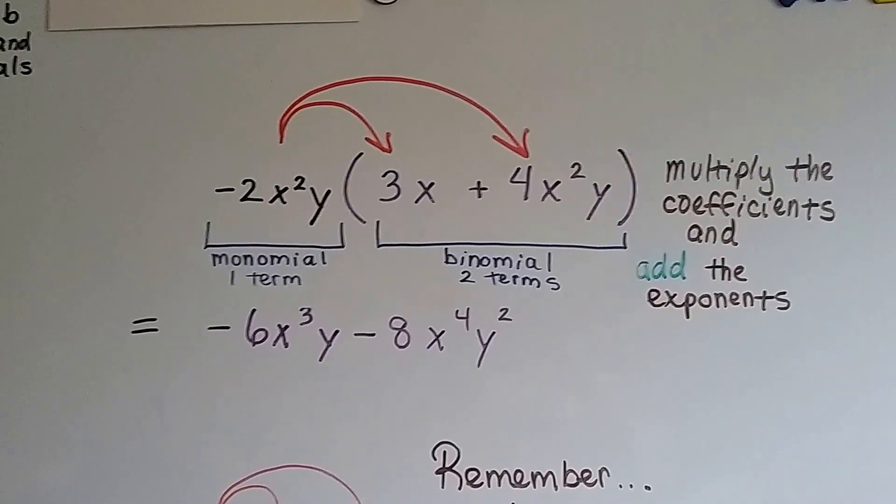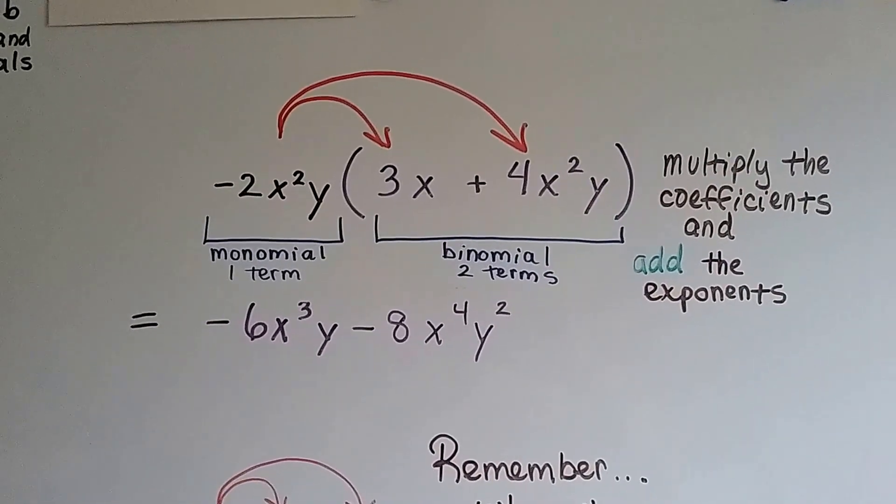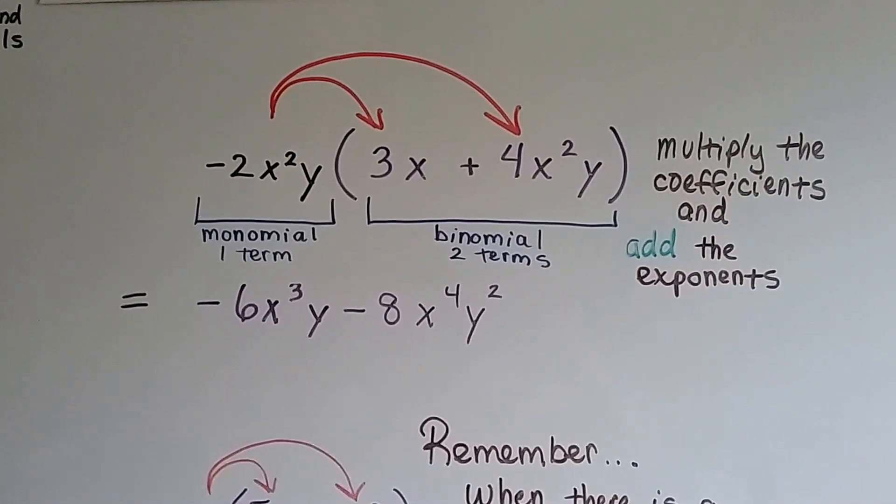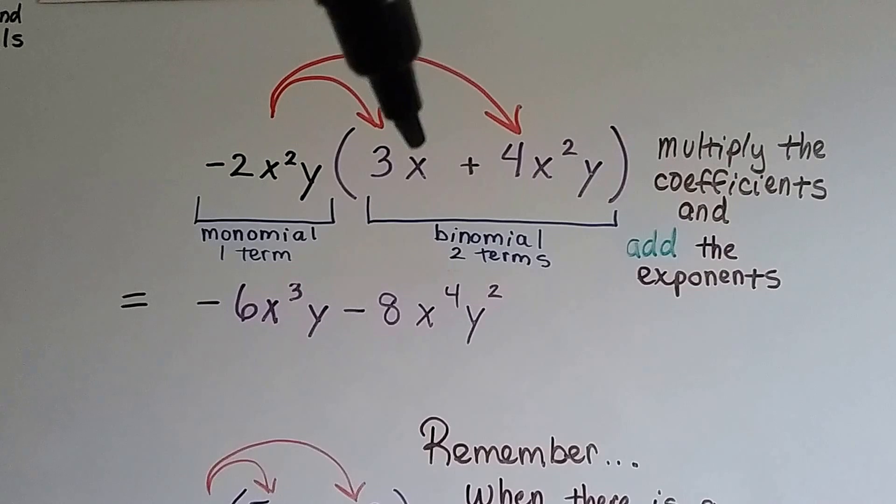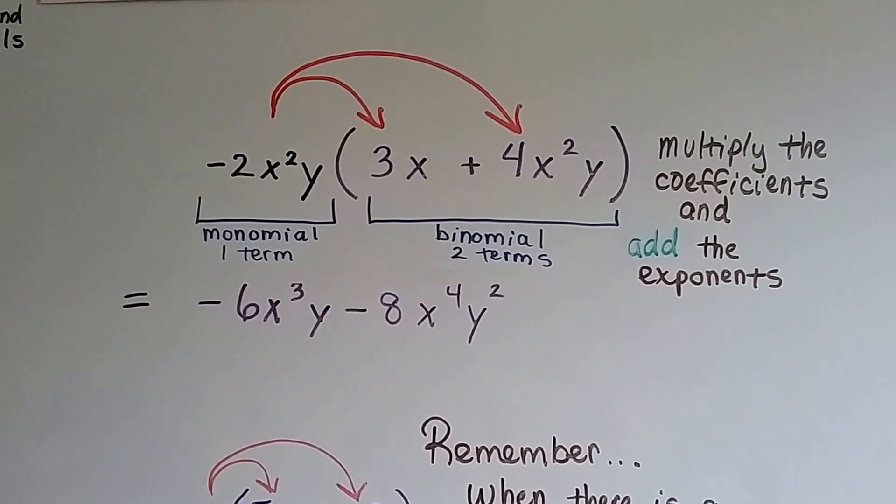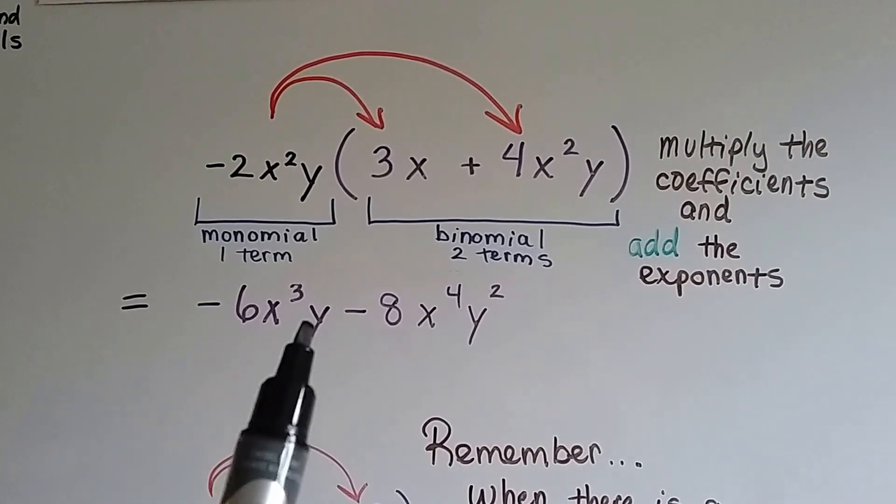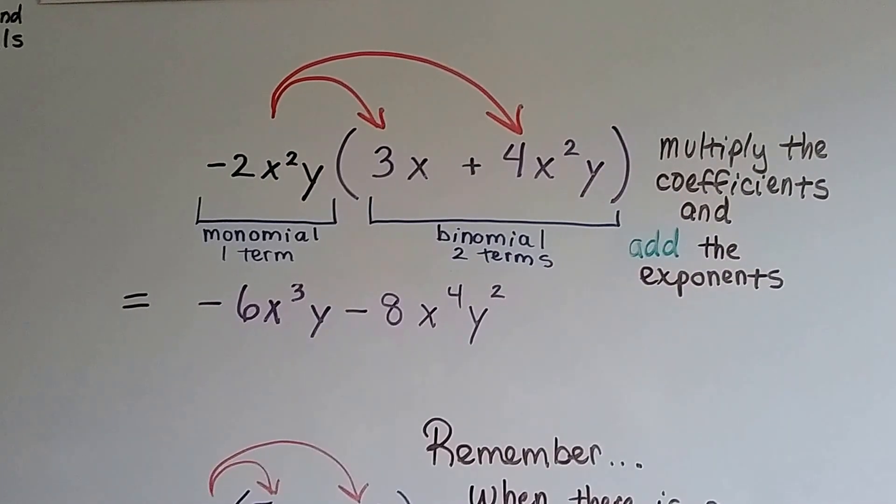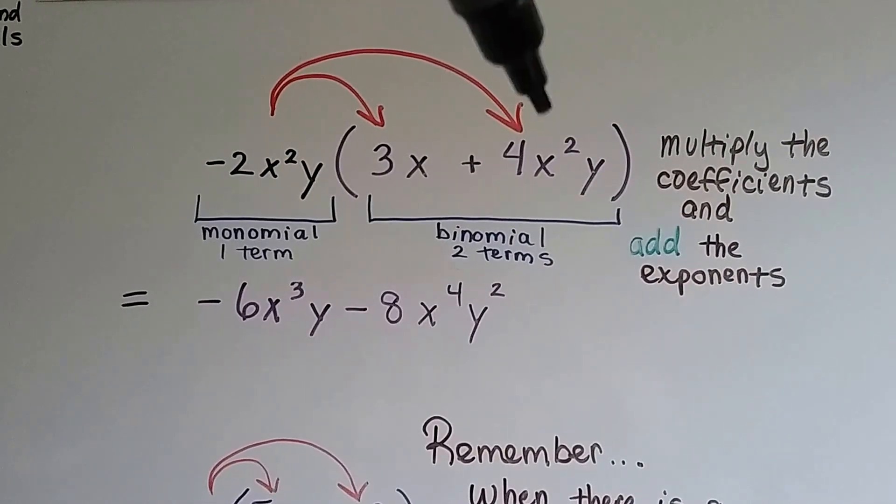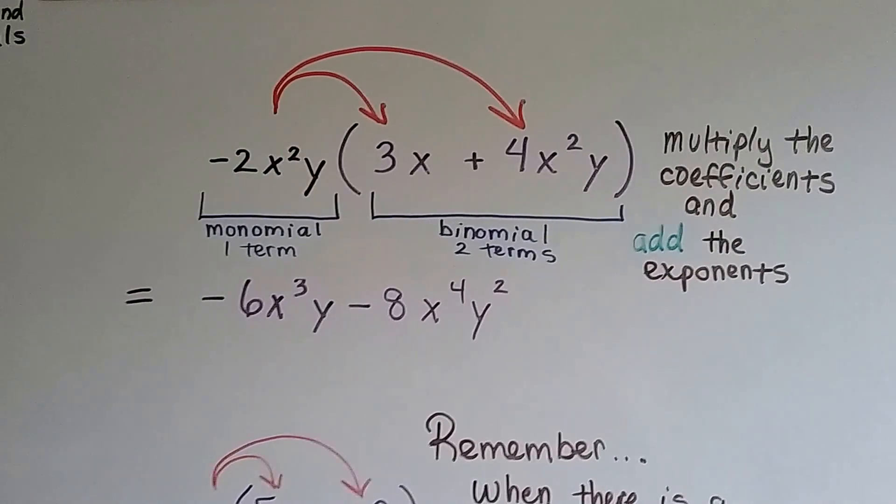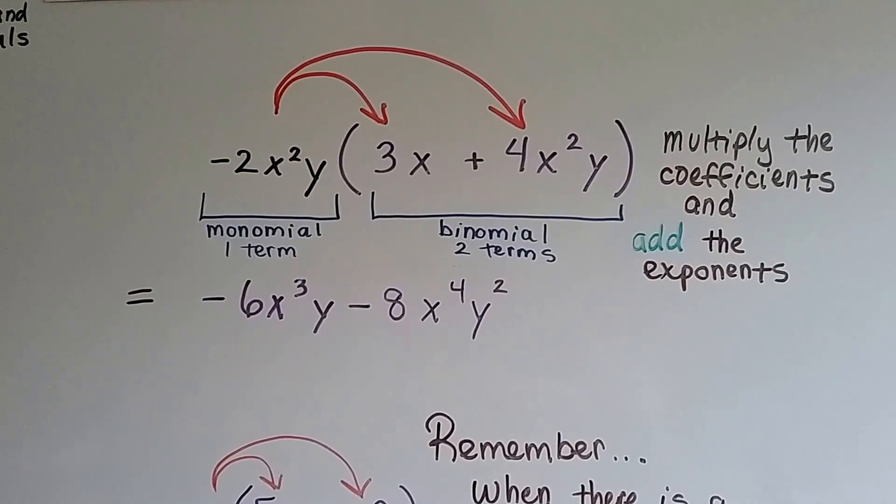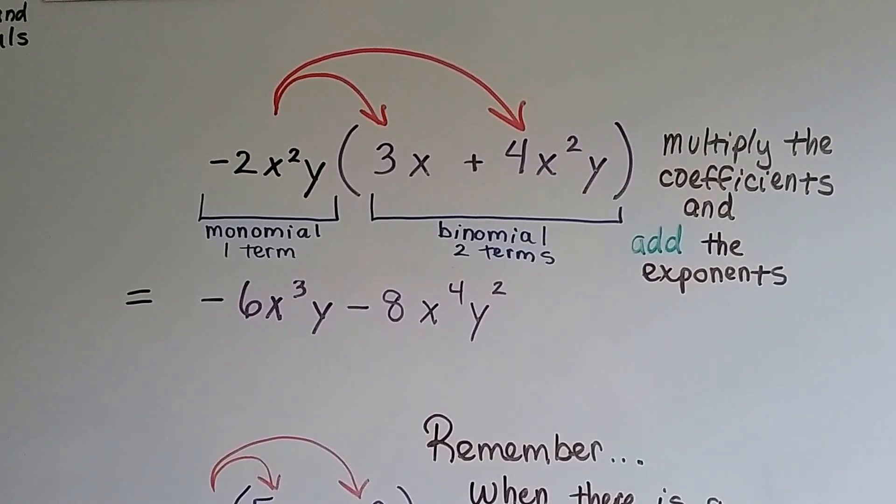So negative 2 times 3 is negative 6. So we get negative 6 here. And then we add the exponents. x squared and x makes x to the third. And we just bring the y along because that one doesn't have a y. When we multiply the negative 2x squared y to this one, we get negative 8. We add the exponents, so x is to the fourth power, y is to the second power.